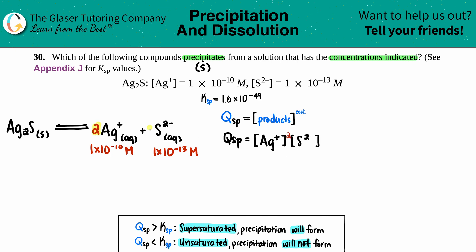The Ag value is 1 × 10⁻¹⁰ and the S is 1 × 10⁻¹³. Let's plug those in. Qsp equals—we got the two brackets—1 × 10⁻¹⁰ that's squared, and then 1 × 10⁻¹³.